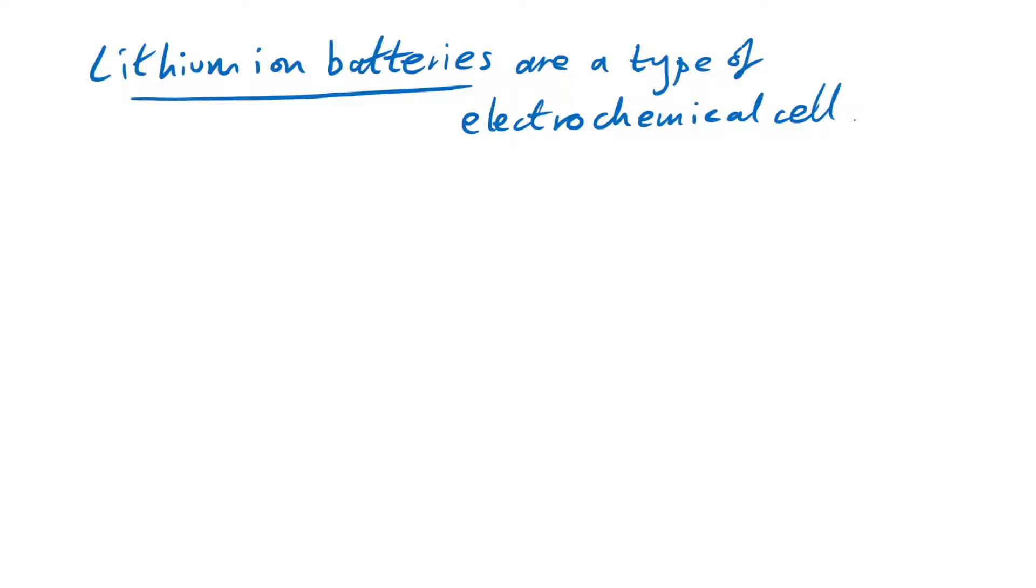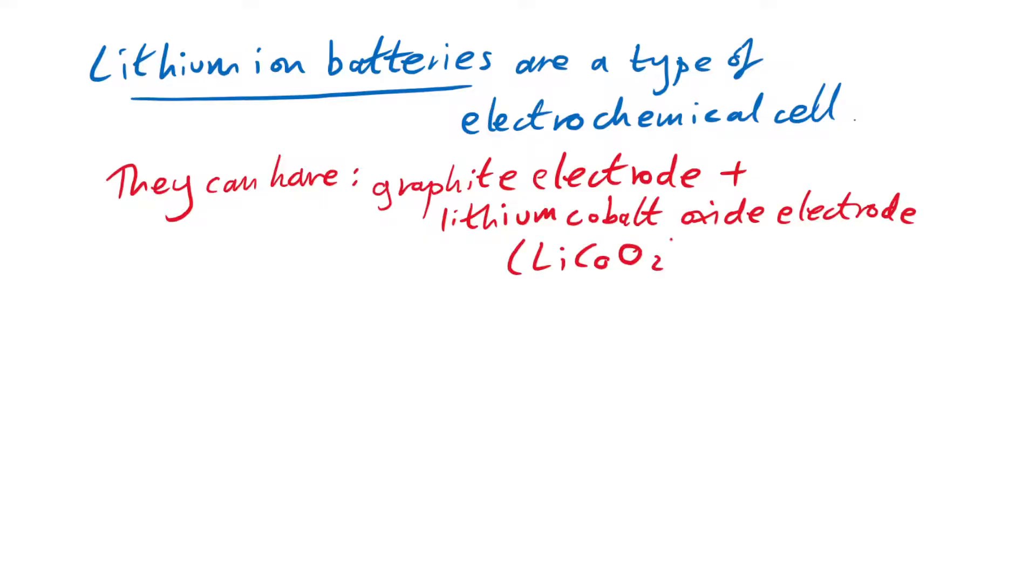Batteries are a type of electrochemical cell, you probably know. One example is lithium ion batteries. They're very common, say in your phone. So they have in them a graphite electrode and another electrode, for example, lithium cobalt oxide. And the electrolyte that links them is a lithium salt. We know it has to have lithium ions in it, don't we?